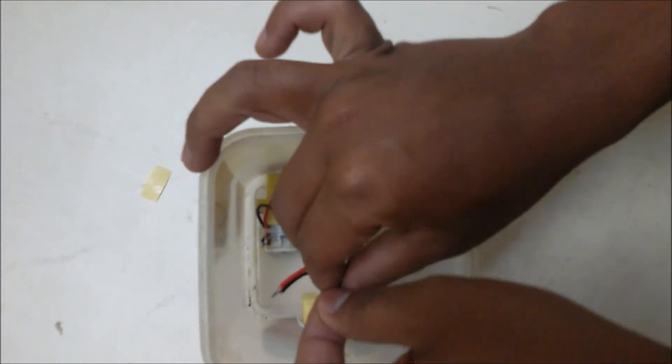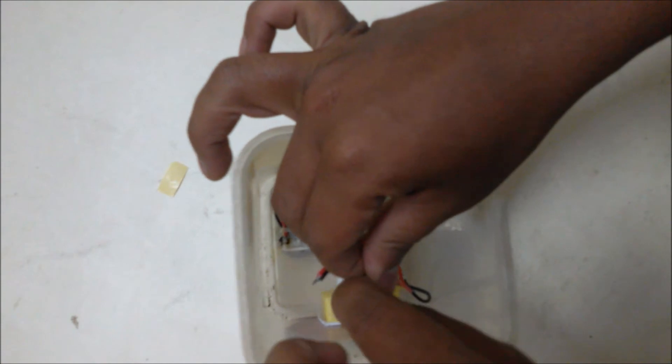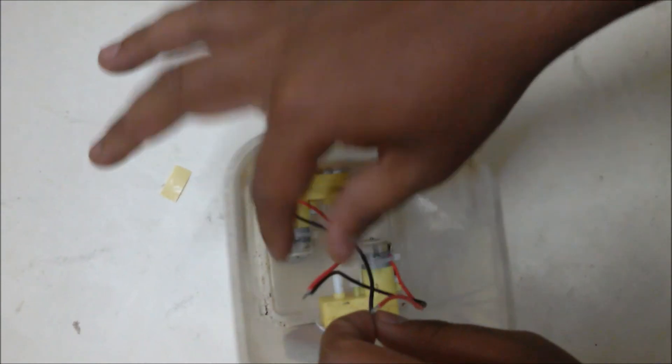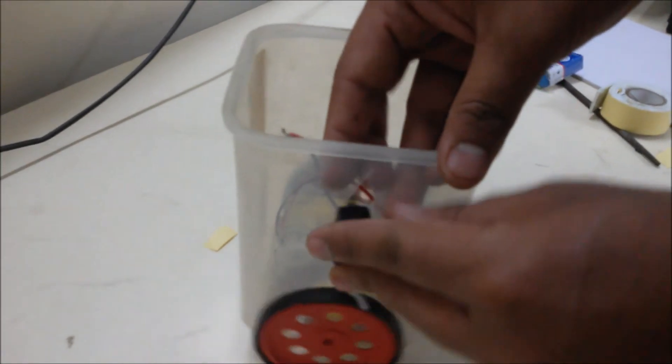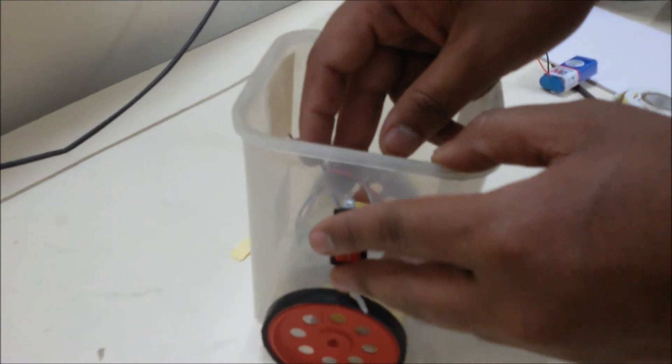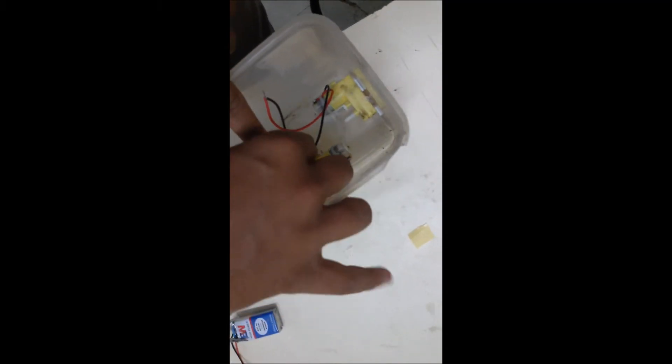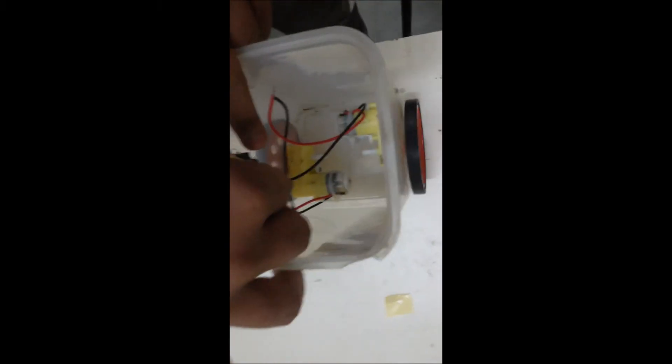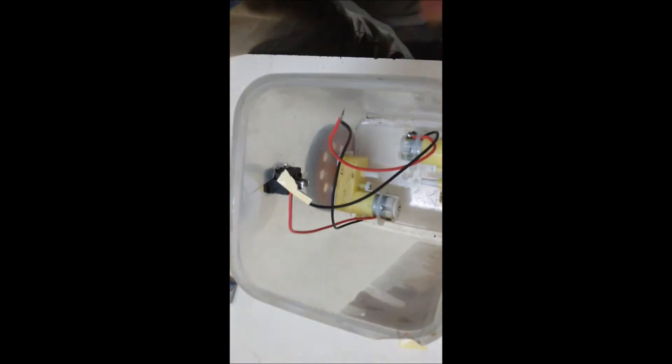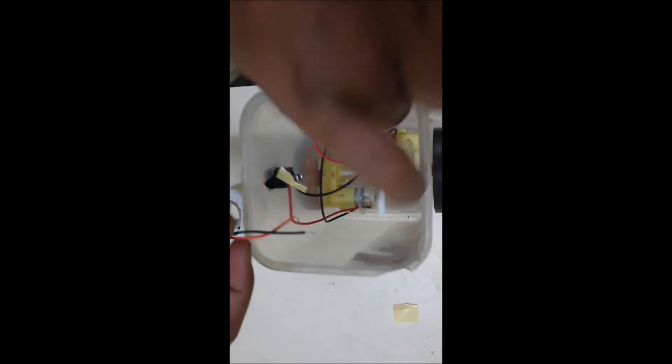Then take the switch and install it in the hole that was drilled previously. Connect all the switch connections. The switch should be properly stuck in place. If it's not secure, it will come off continuously, so stick it properly and be careful.